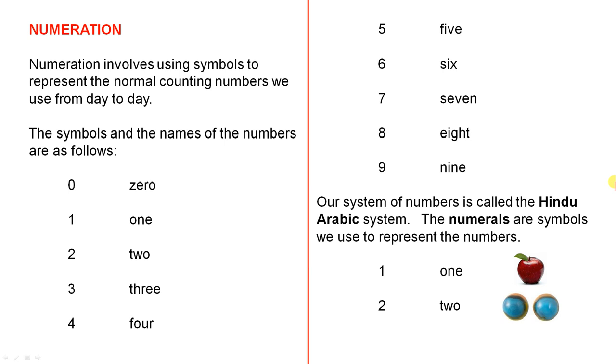Numeration. Numeration involves using symbols to represent the normal counting numbers we use from day to day. The symbols and the names of the numbers are as follows. So here are the symbols we're used to writing. They're just marks on a page, and that's what they mean. They stand for the numbers that we use every day, the main ones from 0 to 9. Using all those symbols or a combination of them, we're able to write whatever numbers we want.